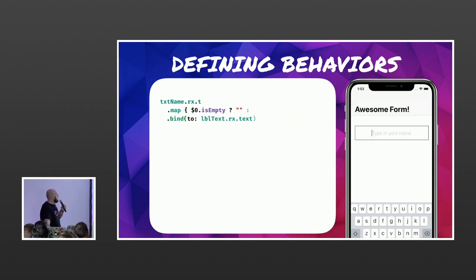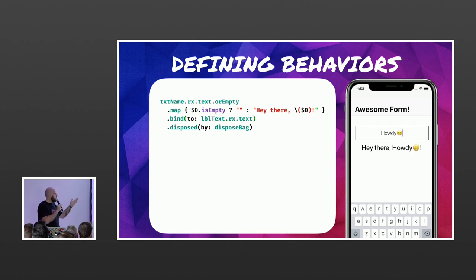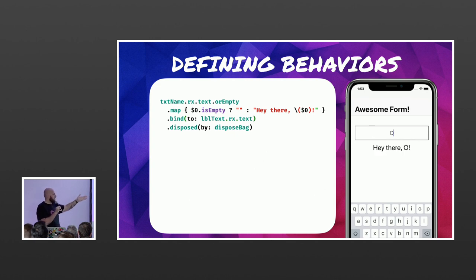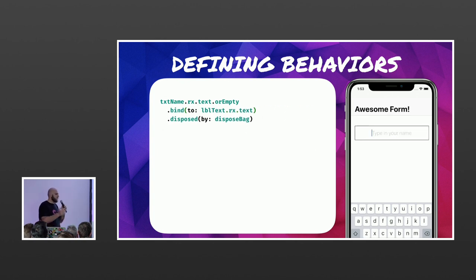We can even remove the button altogether, making everything typed in the text field directly mapped into the label — which even more explicitly shows how reactive it is. We can go further and remove the map too, so whatever is typed in the text field is immediately reflected in the UI label below.